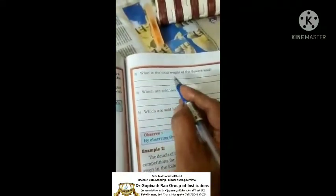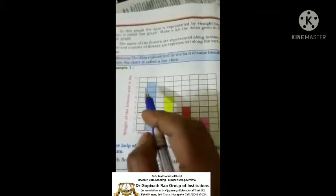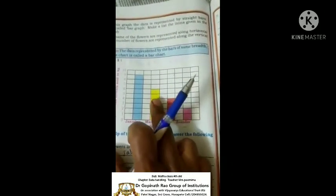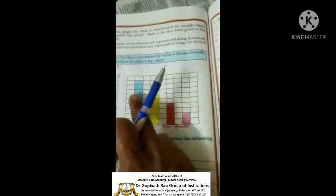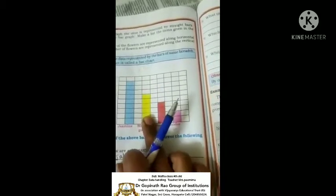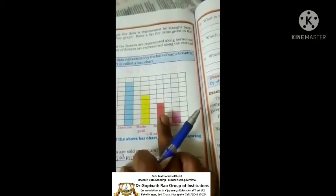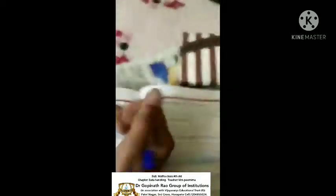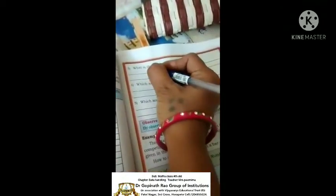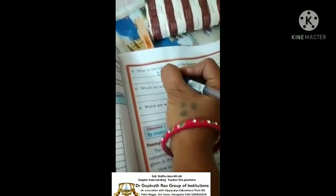Next, what is the total weight of the flower? This is the total weight of the flowers. What is it? 9 plus 1, 2, 3, 4, 5, 6. 9 plus 6 is 15. 15 plus 4 is 19. 19 plus 2 is 21. 21 kgs.